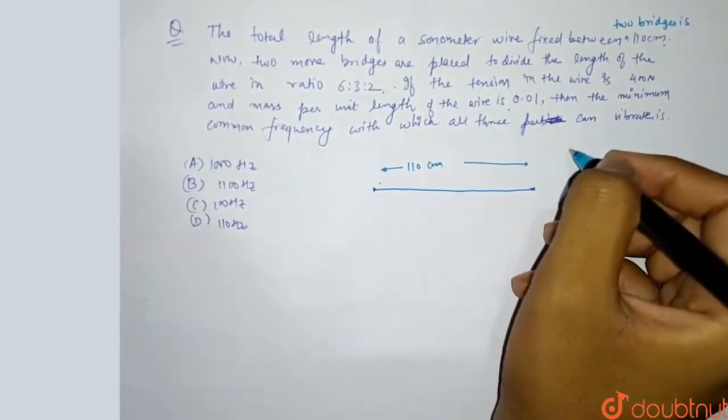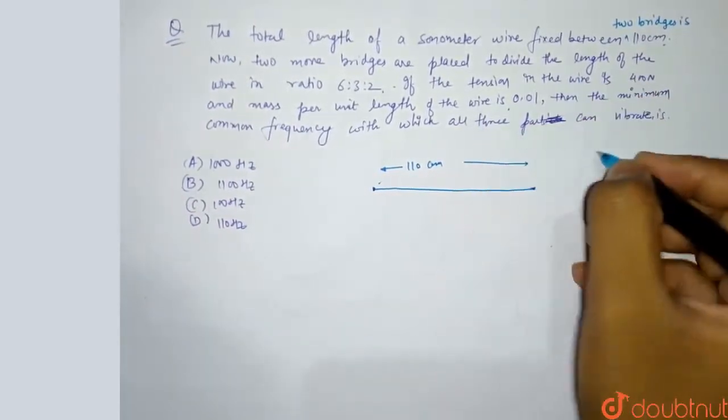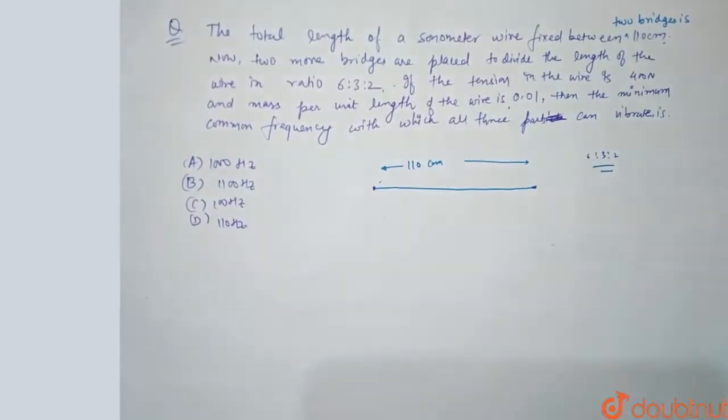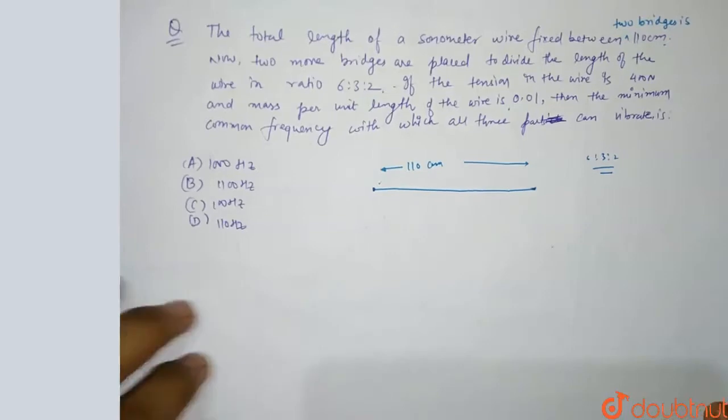Now we are told that we have put bridges in 6 is to 3 is to 2. What are bridges? From these locations we will make nodes.